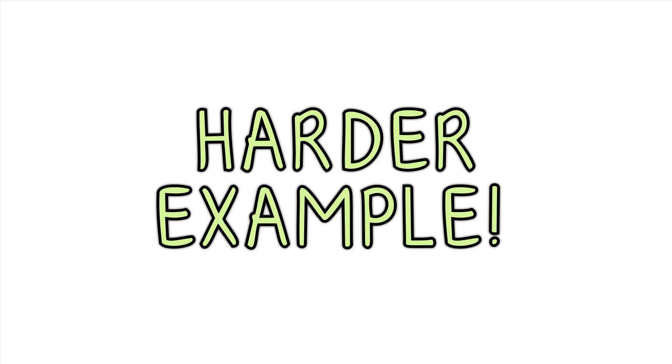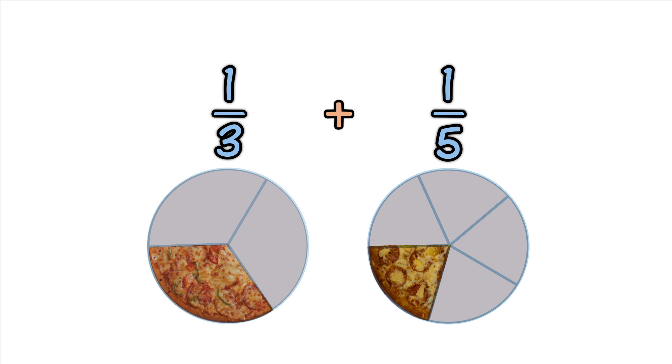Let's take a look at a slightly harder example: 1/3 + 1/5. Again, the bottom numbers are different. The slices are different sizes, but let us try dividing them into smaller sizes that will each be the same.